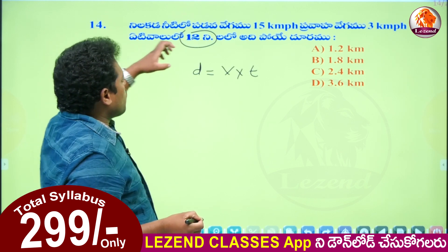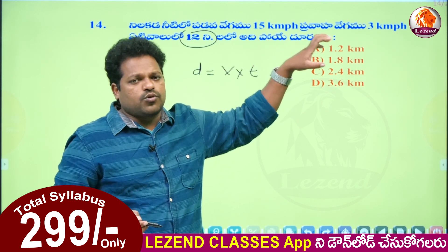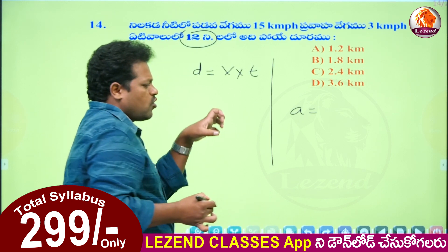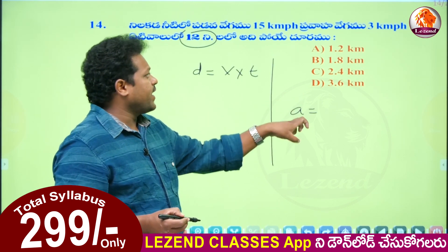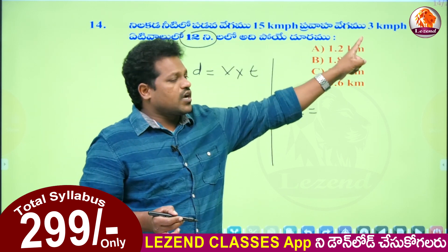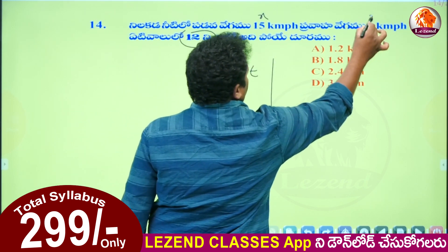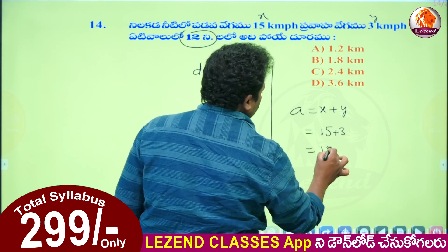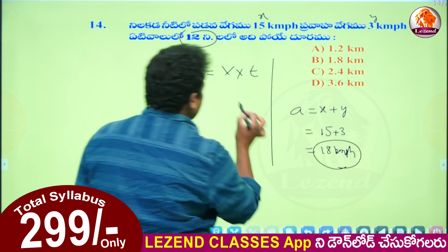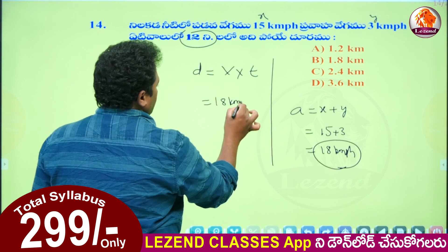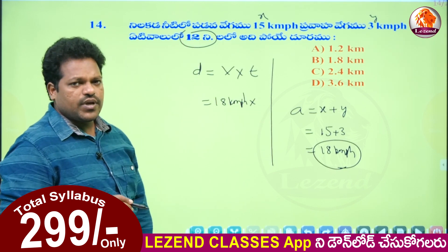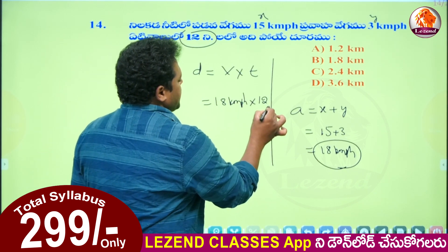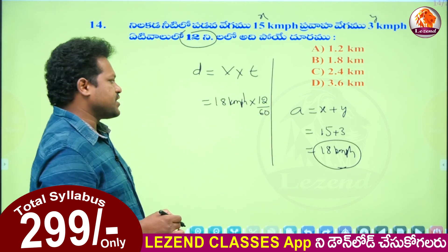Vegamu ganukko valli, A is equal to — ikada, padava vegamu fifteen kilometer per hour, pravaha vegamu three kilometer per hour. This is pravaha dhishalho, palita vegamu — substitute vegamu place lho — 18 kmph. Ikada time e manu chadu, 15 nimi shalalu, samayamu. Ikada kilometer per hour anandate, gantan lho, 15 gantan lho, change aal, time e manu ghaapatti 15 gantan lho, by 60.